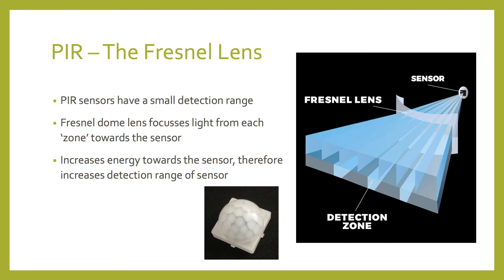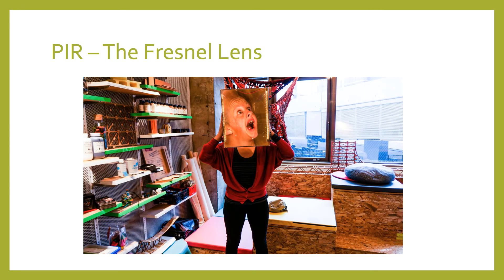PIR sensors by themselves have a very small area of sensitivity, meaning the heat signatures they can pick up are within a limited range and direction. To increase the angle and range of sensitivity, a multi-zoned Fresnel dome lens is mounted on top of the sensor. This dome lens focuses light from each zone to the sensor, increasing the amount of energy detected. A good way to illustrate this is with a picture — my head is behind a Fresnel lens, and you can see how it magnifies it. As my head is in the focal point of the lens, the light makes my head look bigger. In the opposite way, light or radiation going into the Fresnel lens sees a larger area of sensitivity, since the energy will be focused towards the sensor.